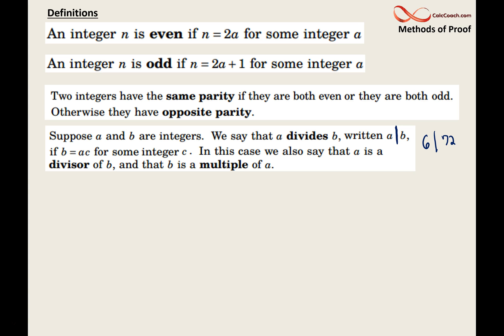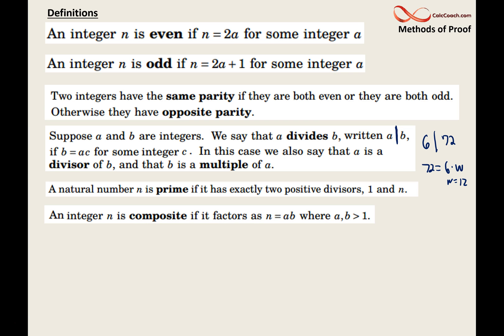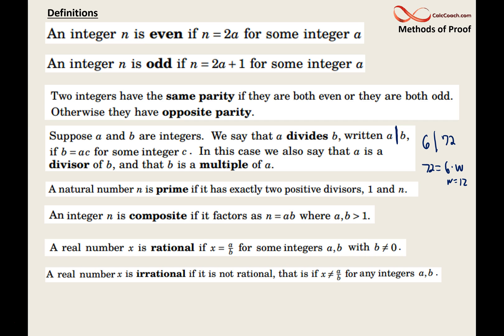The definition of a divides b is that b can be written as a times some other integer. 72 can be written as 6 times some other integer. The integer is 12. The a is the divisor of b, and b is the multiple of a. We don't need these other definitions, but they're there if you need them.